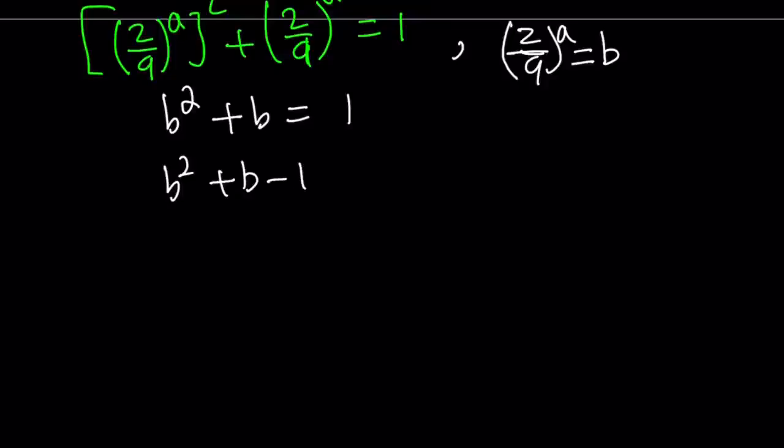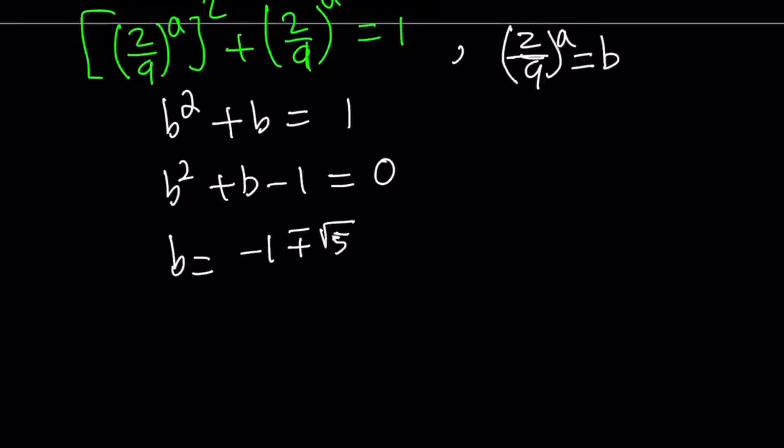If you solve this using the quadratic formula, we're going to get two solutions. Negative b plus minus the square root of b squared, which is 1, minus 4ac, which is square root of 5, over 2. And from here, we can split it up. Say, b1 is equal to negative 1 plus square root of 5 over 2. And b2, which is the other b value, is negative 1 minus square root of 5 over 2.